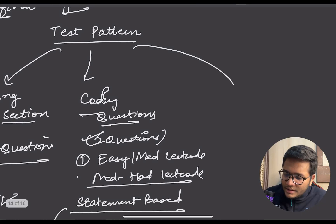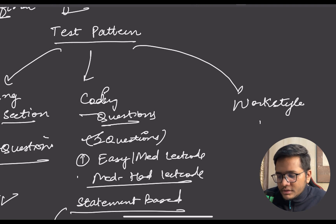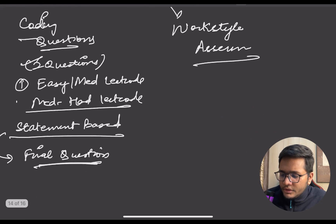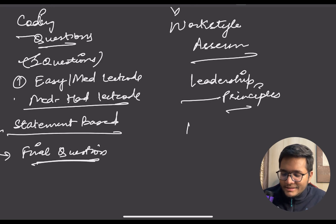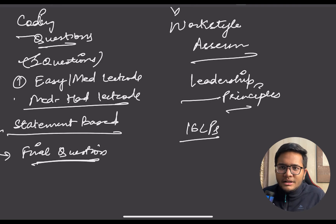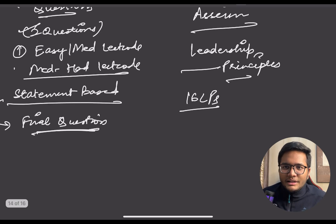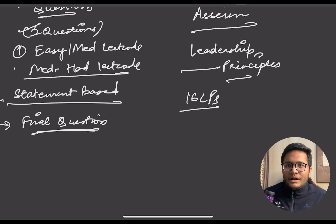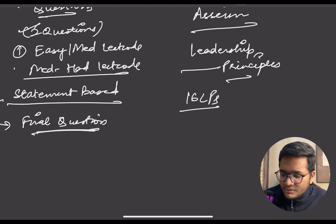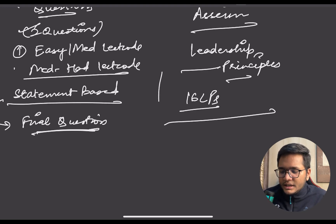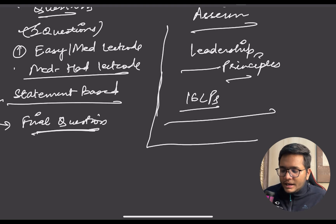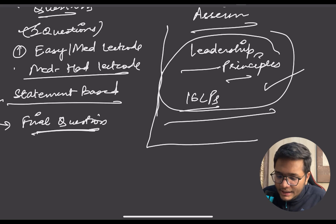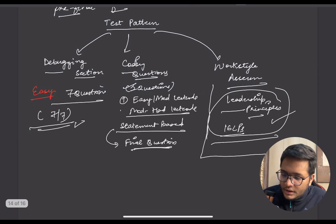After the coding questions, there is a work style assessment that many people ask about. It's based on Amazon's leadership principles — there are 16 leadership principles on the Amazon website. This section judges your personality and whether you align with Amazon's values. Questions might be like 'do you like going to places on time?' with a yes or no answer. It's a non-evaluative part, but I recommend going through Amazon's leadership principles and answering based on those values.